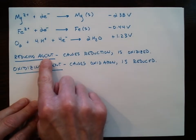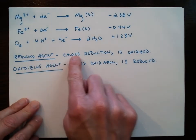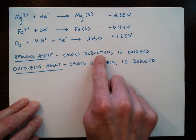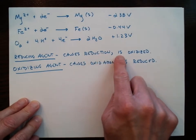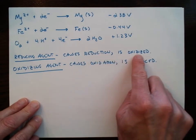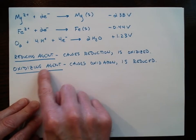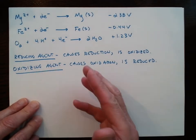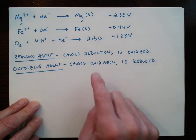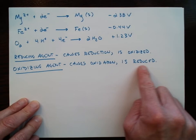The reducing agent is something that causes reduction, and itself is oxidized. On the other hand, an oxidizing agent is something that causes oxidation, and so it itself must be reduced.